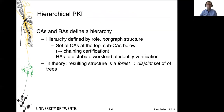Still, as you're going to see, people actually stuck with this. CAs and RAs define a hierarchy — the role is important, not the graph structure. So you have a set of CAs at the top, you might have sub-CAs below (remember the chaining of certification), and you might have registration authorities to distribute the workload of identity verification. If you look at it as a graph, you don't have a single graph anymore — what you have is a disjoint set of trees, a forest.